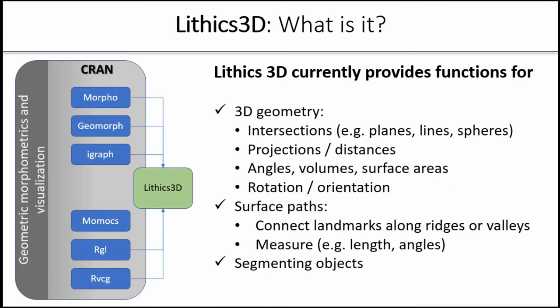Lithics 3D currently provides functions for working with virtual models as geometric objects. Functions for basic geometric operations such as intersections between planes, lines, and spheres. Functions for computing angles, volume, surfaces, and also for rotating 3D data in a way that allows us to standardize the orientation of artifacts. It also provides functions for connecting landmarks on the surface of the object following ridges or valleys, and to measure things such as edge angles along these paths, and to segment these objects.